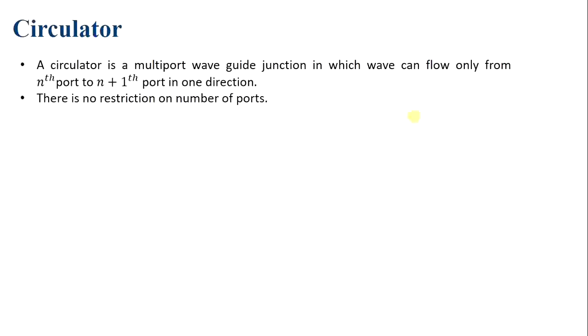Now we move on to the circulator. Ideally, a circulator is an N-port device, or a multiport waveguide junction, in which a wave can flow from the Nth port to the N+1 port in one direction only. For example, if input is applied at port 1, output will be only at port 2; if a signal is applied at port 2, output will be only at port 3 — and so on in a cyclic manner. There is no restriction on the number of ports.